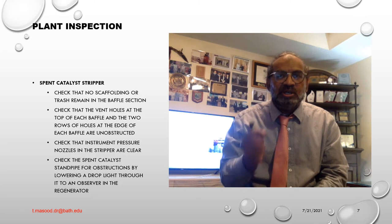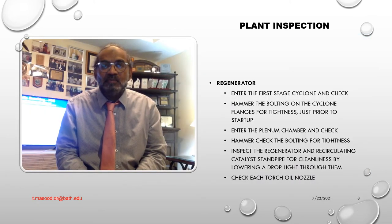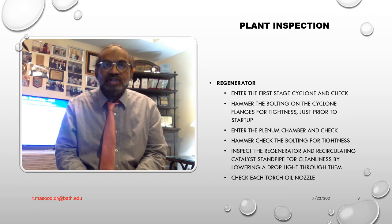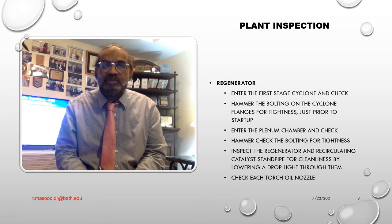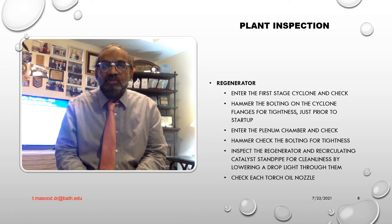Regenerator: A — enter the first-stage cyclone and check: number one — all scaffolding and debris are removed and dip pipes are free from obstructions; number B — hammer the bolting on the cyclone flanges for tightness just prior to startup. C — enter the plenum chamber and check: number one — each second-stage cyclone for cleanliness; number two — dip pipes for obstruction by lowering a light to an observer in the regenerator; number three — the plenum chamber for trash and tools, and immediately witness the installation of the manway. D — hammer-check the following upholds for tightness: dip pipe flanges, pressing ladder, and scaffolding supports.